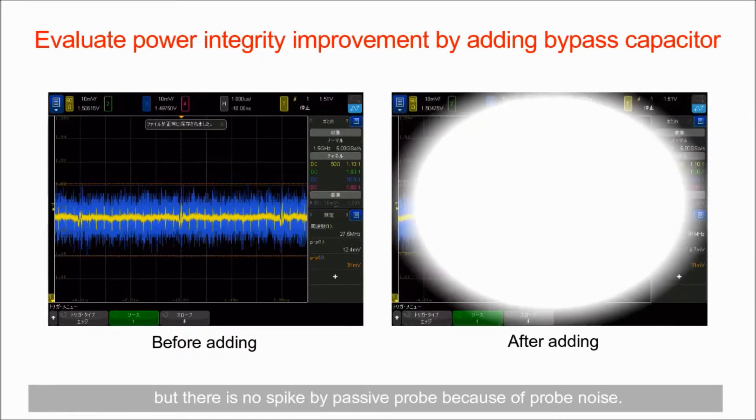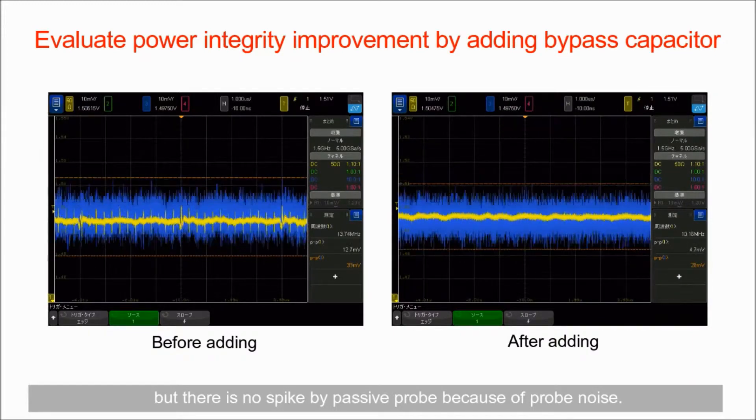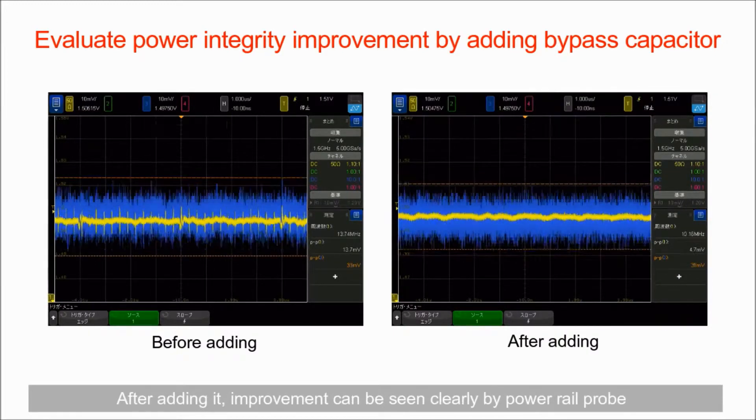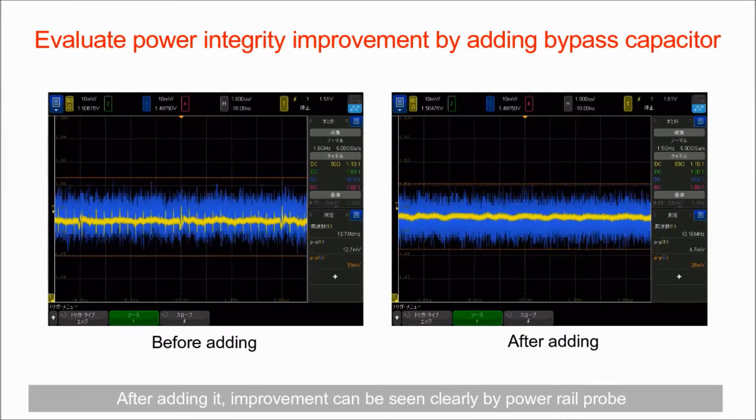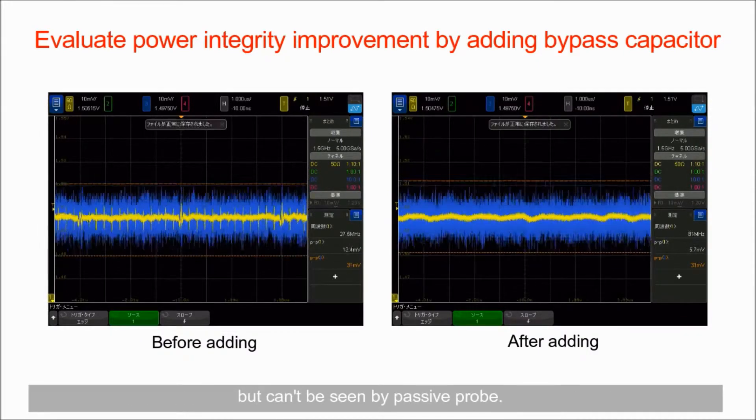But there is no spike by passive probe because of the probe noise. After adding it, improvement can be seen clearly by PowerRail probe but can't be seen by the passive probe.